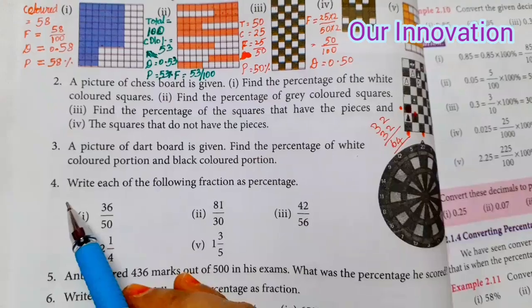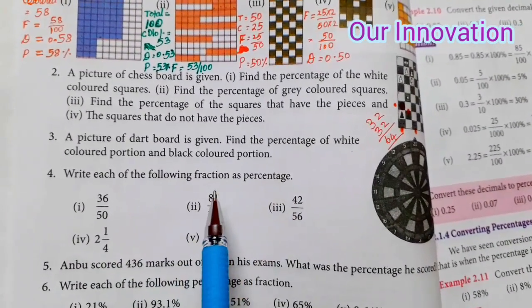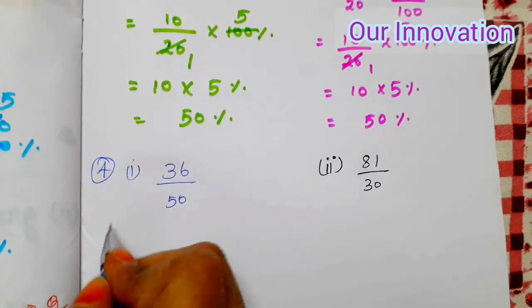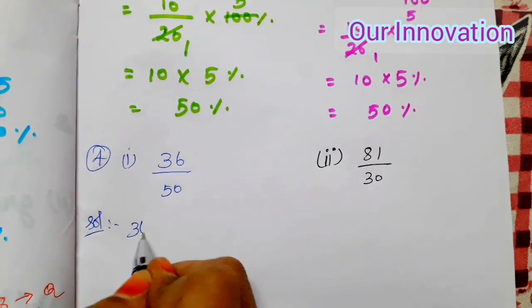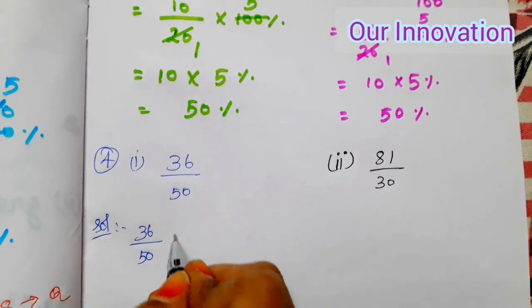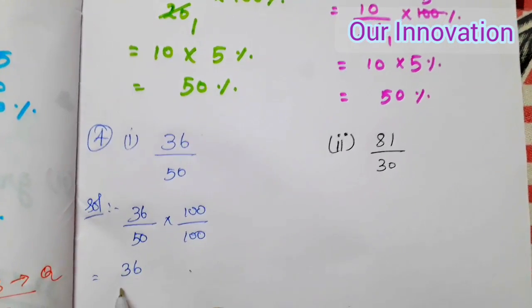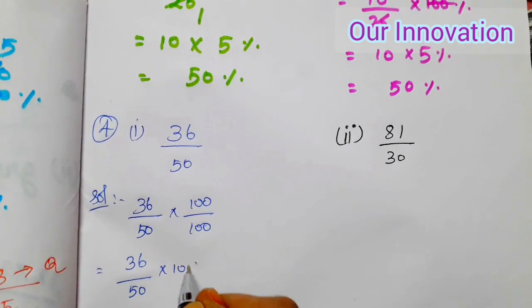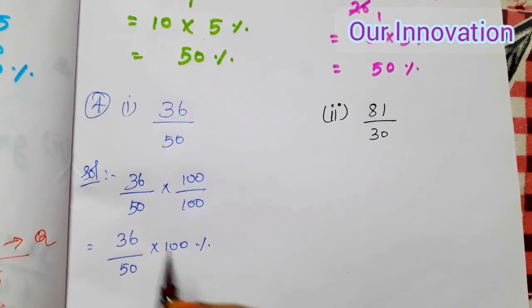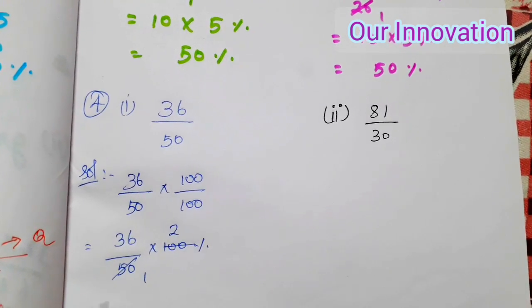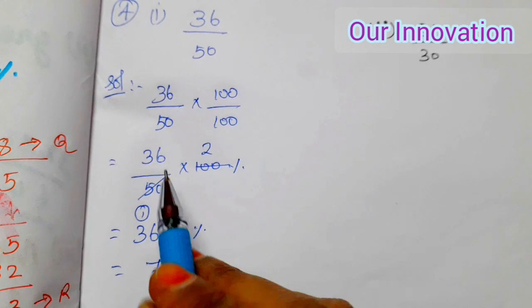After cancelling, the answer is 50 percentage for white. Similarly, black is also 50 percentage.